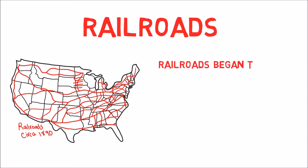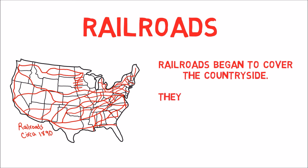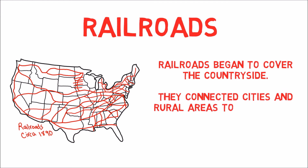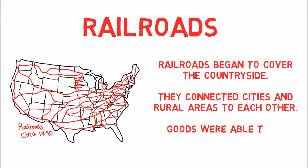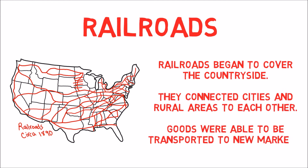Railroads began to cover the countryside. They connected cities and rural areas to each other. Goods were able to be transported to new markets.